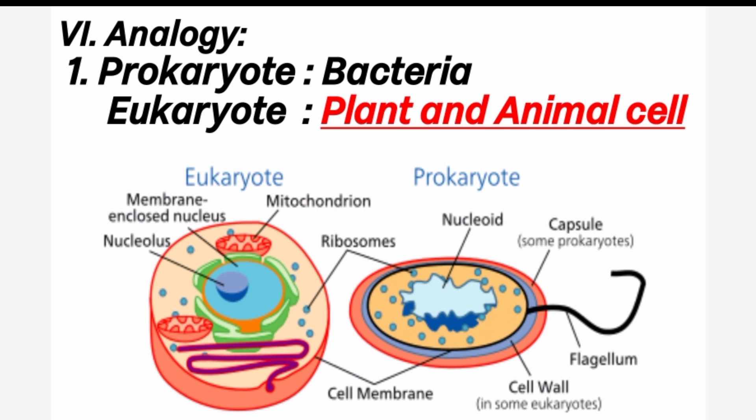Sixth, analogy. First question: prokaryote example is bacteria; eukaryote example is dash. Answer is plant and animal cells. Not only plant cells but also animal cells. Most fungi and algae are also eukaryotic cells. Prokaryotic means no well-developed nucleus. Eukaryotic means well-developed nucleus is present.